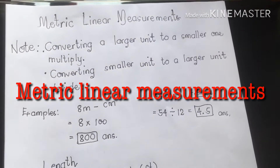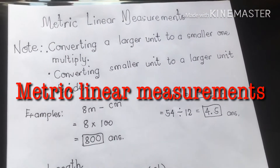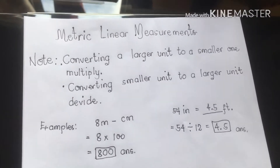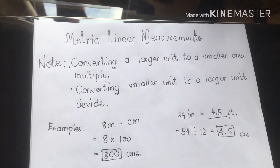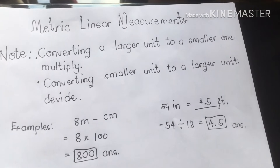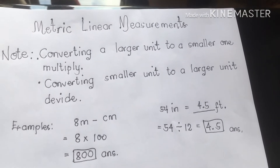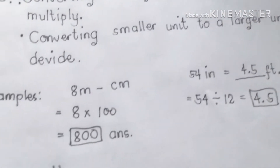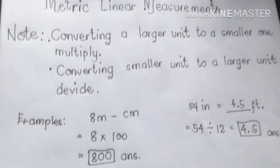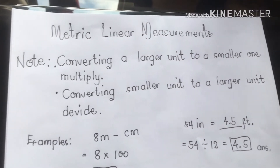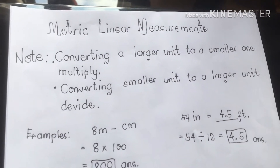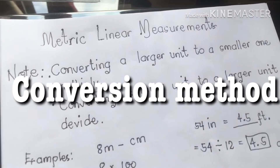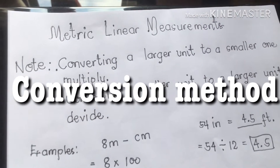Today we're going to discuss about conversion of metric linear measurement. Remember class, the basic unit of length in the metric system is the meter. The units of length most commonly used include the meter, centimeter, millimeter, and kilometer.